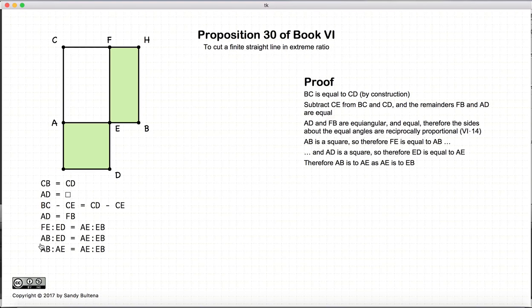We've now cut this line in the extreme ratio, and AB is greater than AE obviously, so therefore we know that AE is greater than EB. And that concludes this demonstration and proof of how to cut a finite line into an extreme ratio.